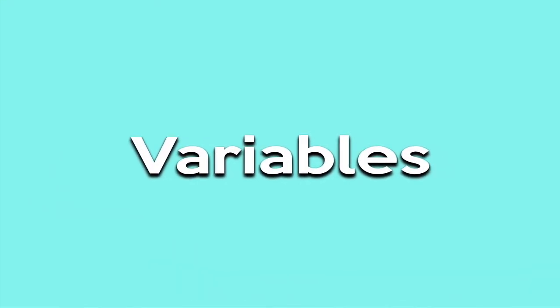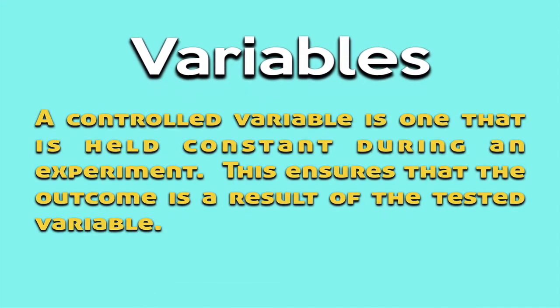One more thing about variables: we have our independent and dependent variables, but really there's one other variable that can exist in an experiment, and that is the controlled variable. This is a variable that is held constant during an experiment. This ensures that the outcome is the result of whatever is being tested. I know that sounds very complicated, so here's an example.